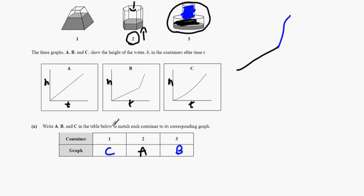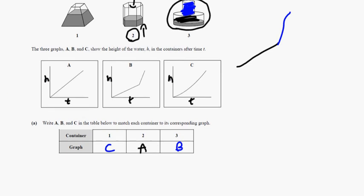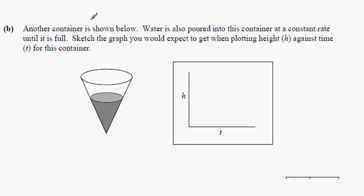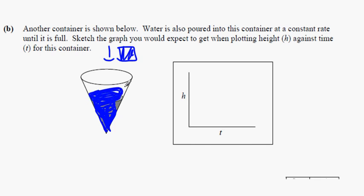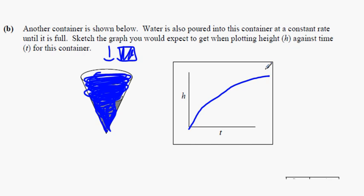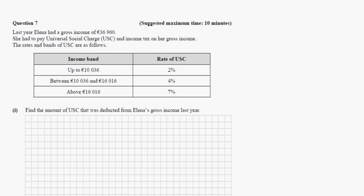For another container shown below, water is poured in at a constant rate until full. At the start the height shoots up really fast, then it keeps getting slower as the container gets wider and wider. So the graph of height against time rises steeply at first and then starts petering out. That completes question 6.